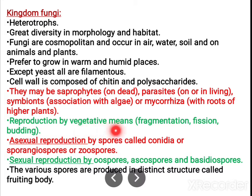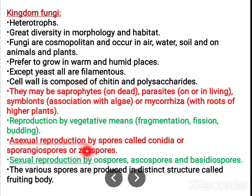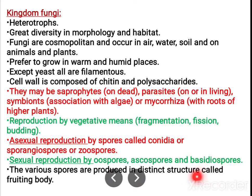Reproduction occurs by vegetative means such as fragmentation, fission, or budding. Asexual reproduction is by the formation of spores called conidia, sporangiophores, or zoospores. Sexual reproduction involves special types of spores: oospores, ascospores, or basidiospores. These various spores are produced by a distinct structure called the fruiting body.